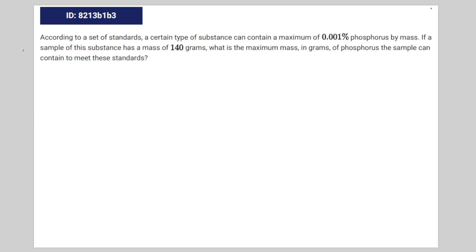So we're given the following math problem. According to a set of standards, a certain type of substance can contain a maximum of 0.001% phosphorus by mass. If a sample of this substance has a mass of 140 grams, what is the maximum mass in grams of phosphorus the sample can contain to meet these standards?